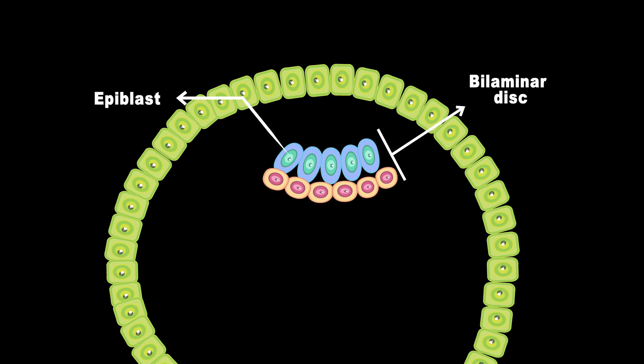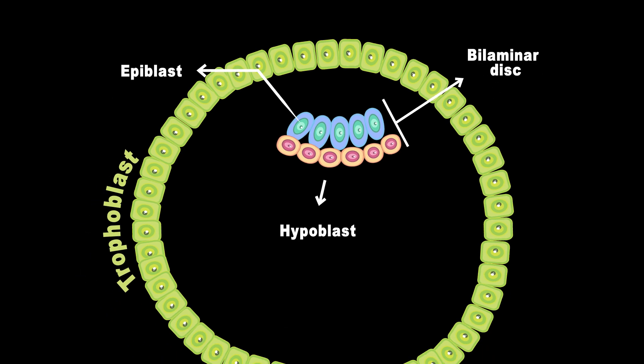They are also called embryonic cells. In a lab setting, epiblast cells resemble human embryonic stem cells or induced pluripotent stem cells. In contrast to the epiblast, the hypoblast and trophoblast cells give rise to extraembryonic tissues like the placenta, umbilical cord, and amniotic sac that support the growth of the embryo.